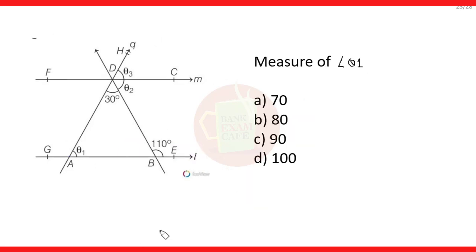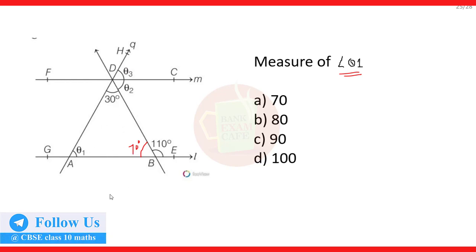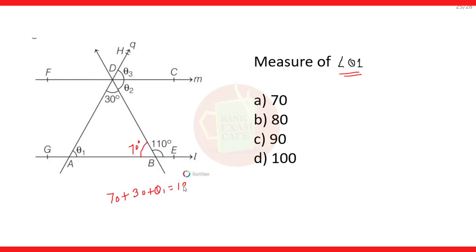Now move to the second question: What is the measure of angle theta 1? In the previous question we got the angle ABD as 70 degrees. You can apply the triangle ABD method — the sum of the three angles of a triangle is 180 degrees. So: 70 degrees plus 30 degrees plus theta 1 equals 180 degrees. 70 plus 30 is 100. Take 100 to the other side: theta 1 equals 180 minus 100, which equals 80 degrees. The correct option is B, that is 80 degrees.